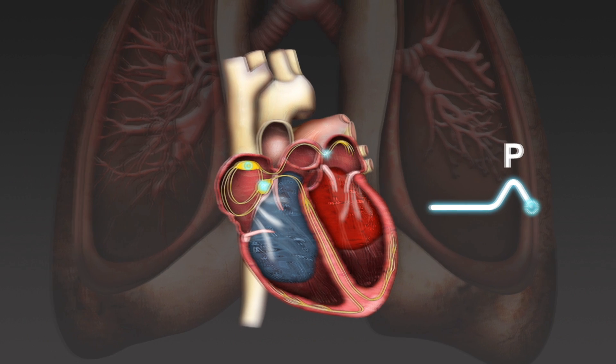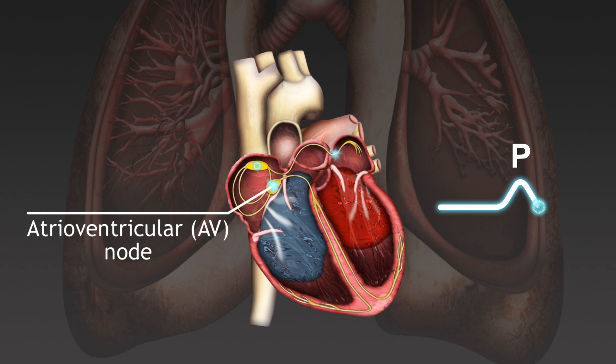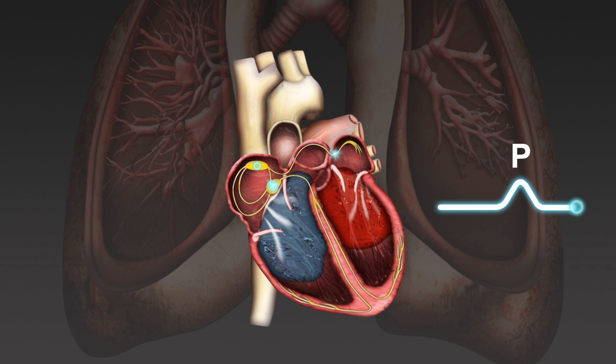The impulse then travels through the atrioventricular node, producing a flat section on the ECG, known as the PR segment. The PR segment is flat because no current is flowing through the cardiac muscle cells.